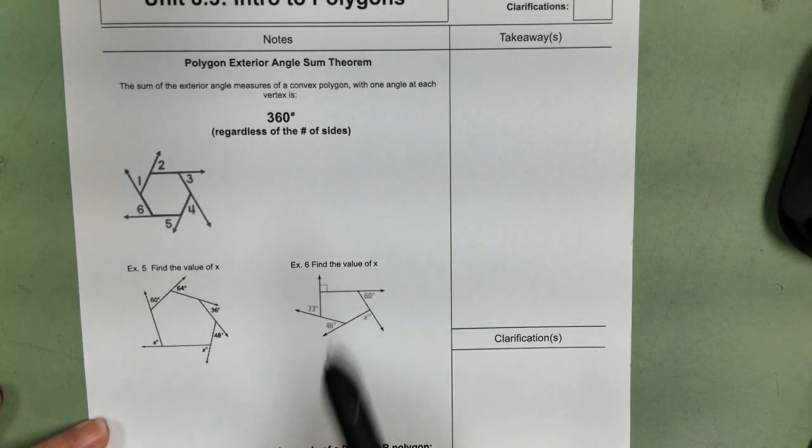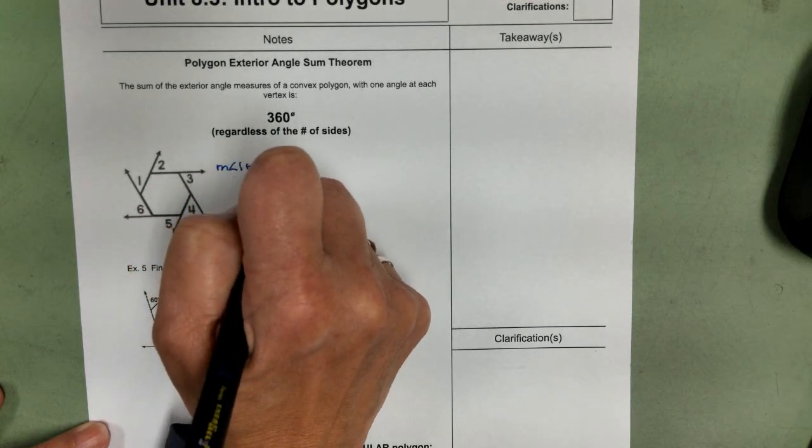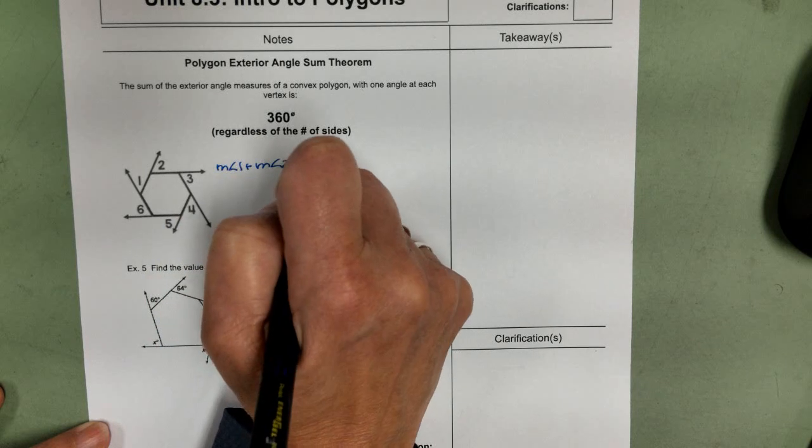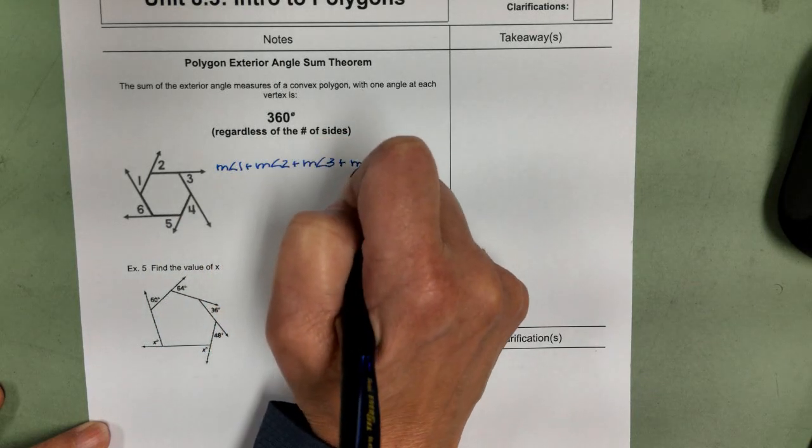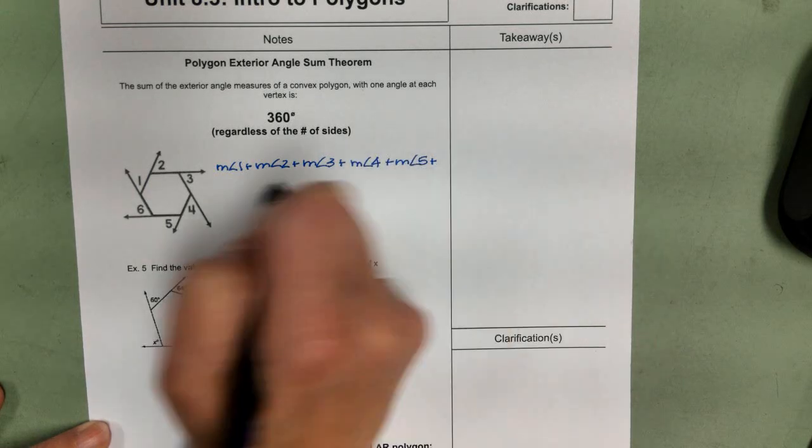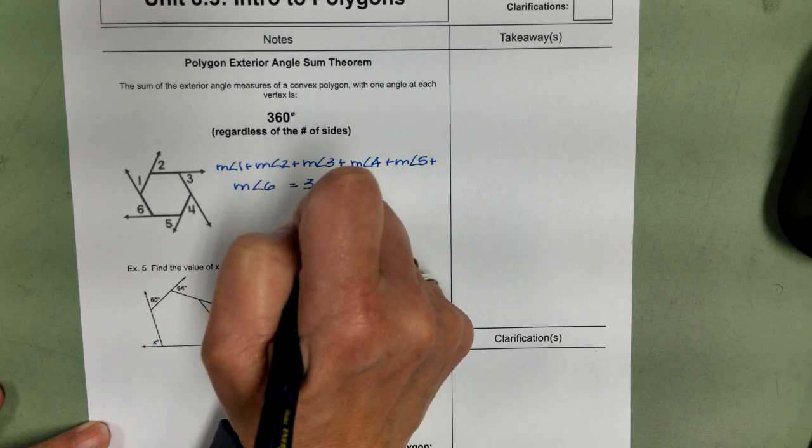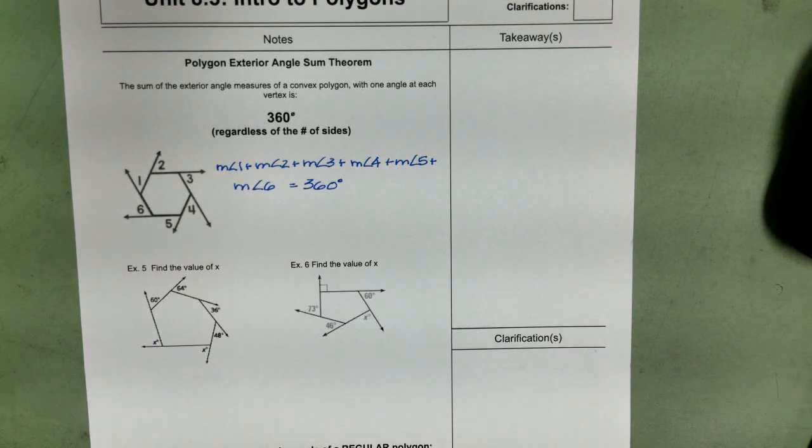So for this one here, it would just be the measure of angle one, plus the measure of angle two, plus the measure of angle three, four, five, six equals 360. It doesn't matter. I can have a quadrilateral, a dodecagon, a 20-sided icosahedron. It doesn't matter. You add up all the exterior angles, and it's going to be 360.